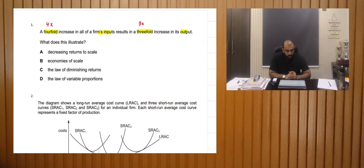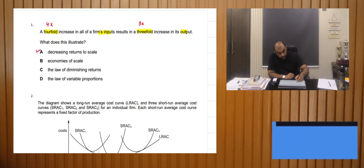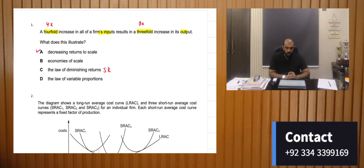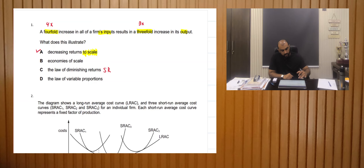Looking at the options, the first option is decreasing returns to scale, which is what we discussed, and hence every other option is incorrect. The law of diminishing returns is a short-run concept, therefore it is not the right answer. Long-run would always have returns to scale, which shows that the scale of production has increased.